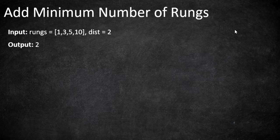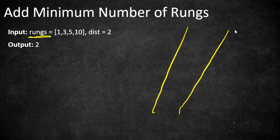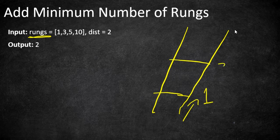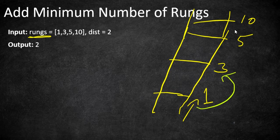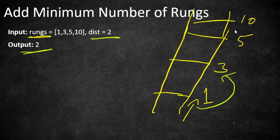The rule is you can only climb to the next highest rung if the distance between the current one and the next rung is at most the given distance. The integer array rungs represents the positions of each rung on the ladder from the floor — so rungs are placed at distances 1, 3, 5, and 10 from the floor. We can climb from one rung to the other only if the maximum distance is 2, and we can add rungs as needed.